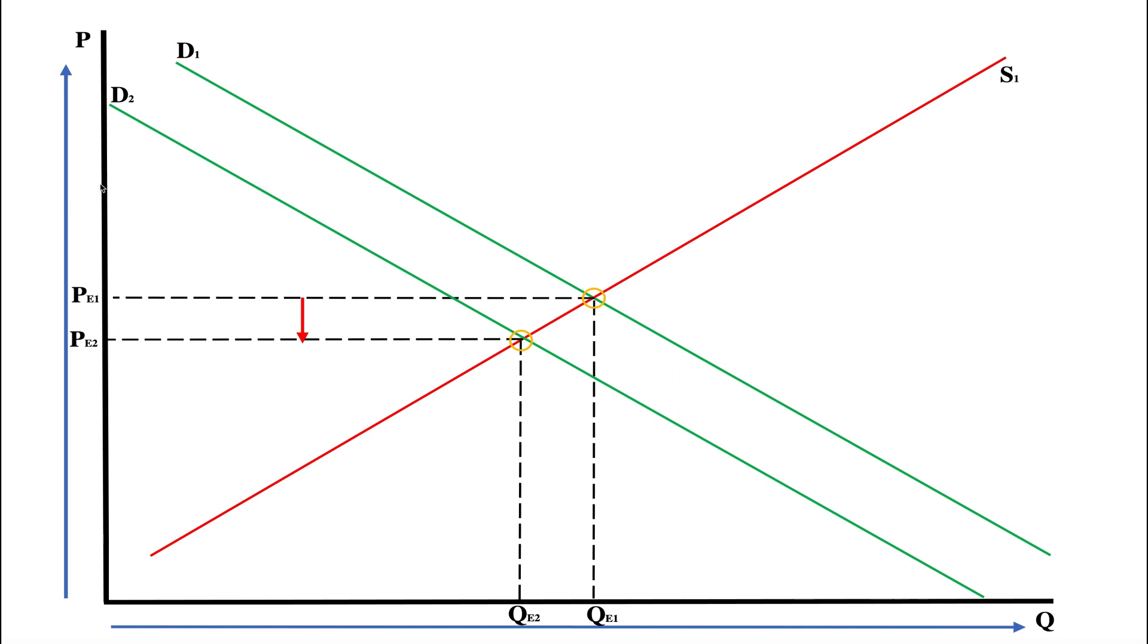As you can see here, price is on the y-axis. Quantity is on the x-axis. Price is increasing as we move up. Quantity is increasing as we move to the right.